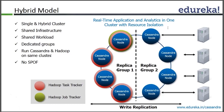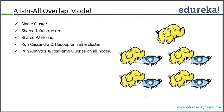The last one is the all-in-all overlap model — absolutely a single cluster. All of them are running Hadoop and all of them are running Cassandra. Shared infrastructure, shared workflow — run Cassandra and Hadoop on the same cluster, and run analytics and real-time queries on all nodes. So there are three different types: standalone with two different clusters exchanging data; hybrid, running both in the same cluster but dedicating a set of nodes to each; and the overlap model, where both Hadoop and Cassandra run on every node in the cluster.